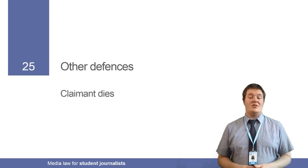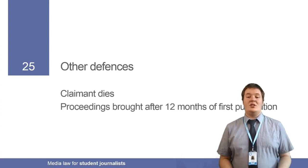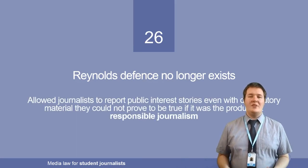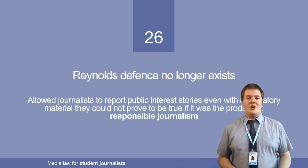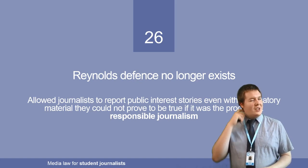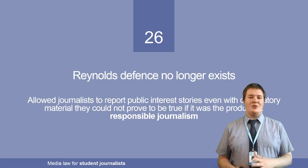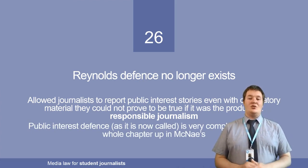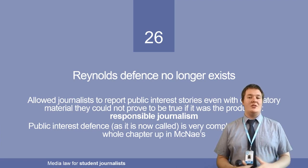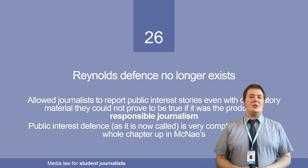Other defences to defamation include if the claimant dies — they can't sue — or if proceedings are brought after the first 12 months of the first publication, so if it was 30 years ago you can't be sued. The Reynolds defence no longer exists. It previously allowed journalists to make defamatory statements without any evidence so long as it was the product of responsible journalism, but the Reynolds defence has been abolished — don't even think about using it. It has been replaced by the public interest defence, which is still very complex and takes an entire chapter in McNae's Essential Law for Journalists. If you've got a story that really is in the public interest, you can look at the public interest defence, but it is incredibly complex.